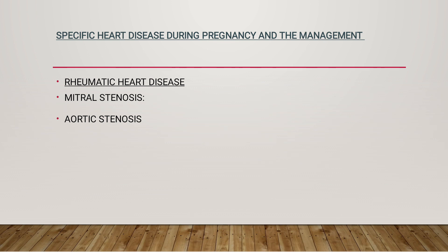Most cases of aortic stenosis are congenital; some are rheumatic in origin. Normal aortic valve area is 3 to 4 centimeters; when reduced to less than or equal to 1 centimeter, stenosis is significant. Significant aortic stenosis carries about 15 to 20% maternal mortality with perinatal loss of about 30%. Epidural analgesia is contraindicated during labor; fluid therapy of 125 to 150 ml per hour should not be restricted. Left ventricular afterload is high and the pregnant patient is sensitive to hemorrhage. Common symptoms are angina, syncope, and left ventricular failure. Valve replacement is the definitive treatment; aortic balloon valvoplasty may be done as a palliative procedure.